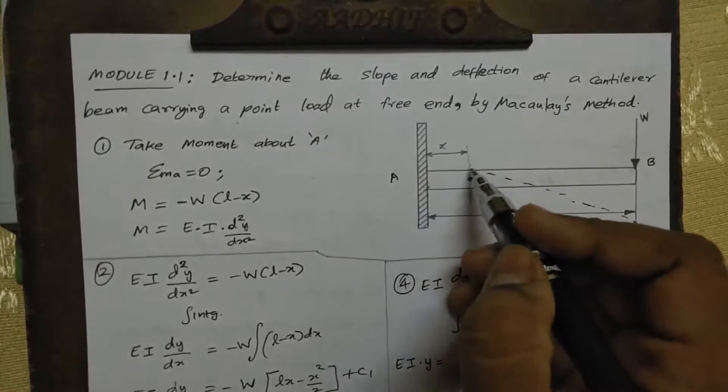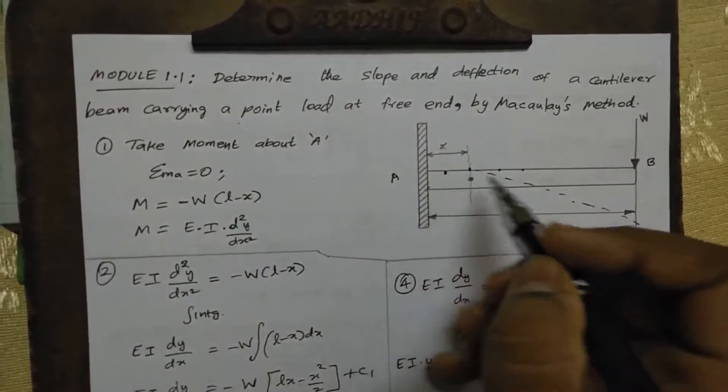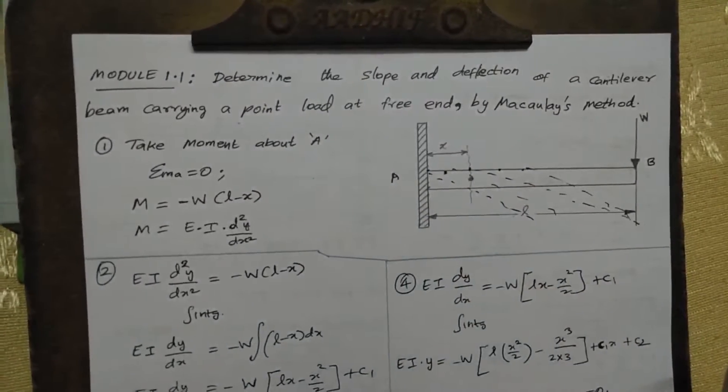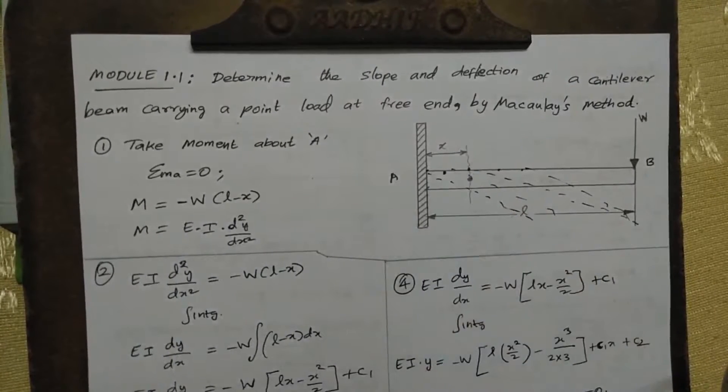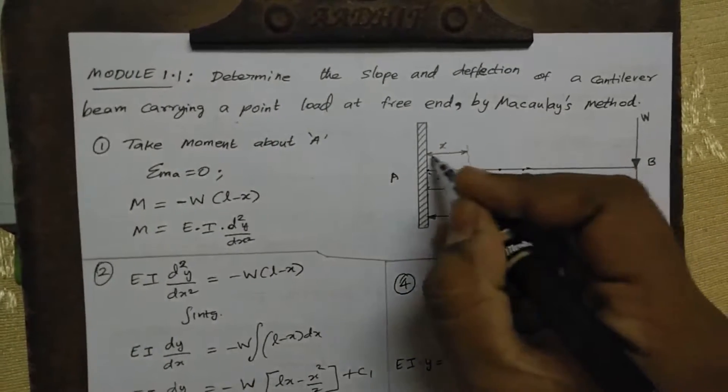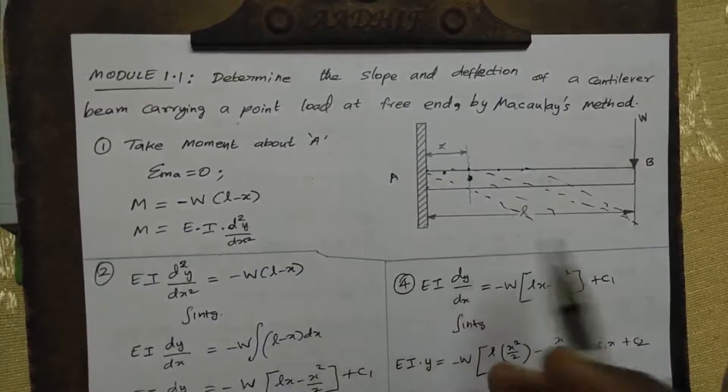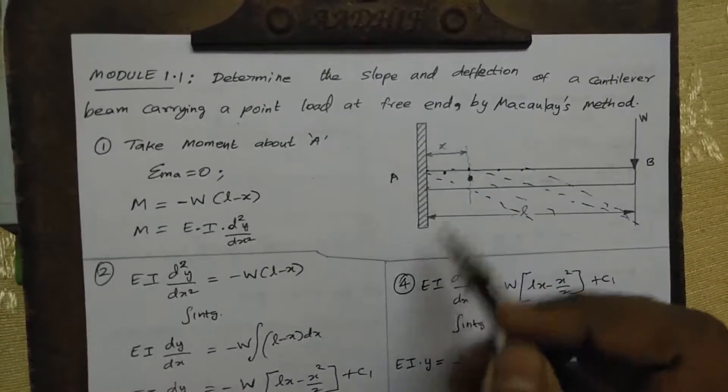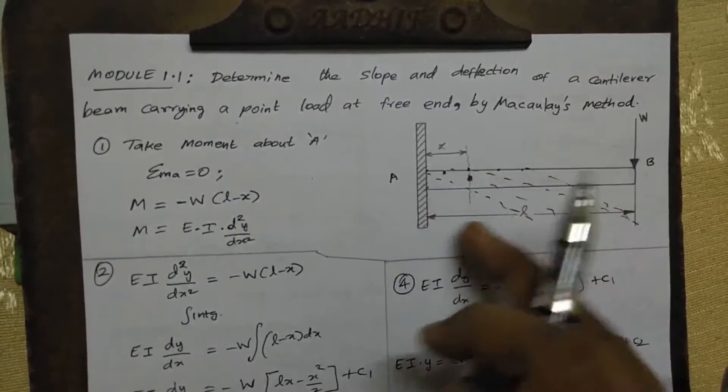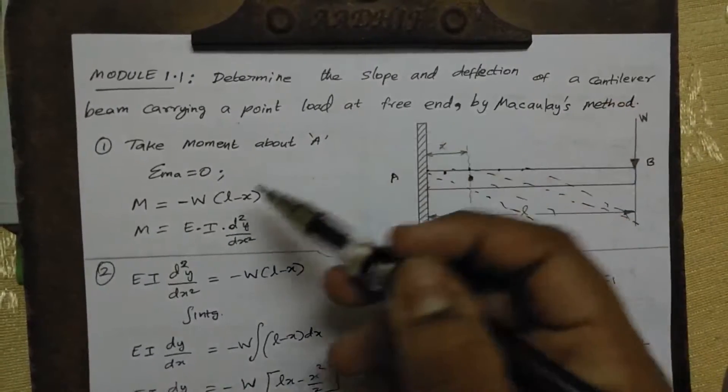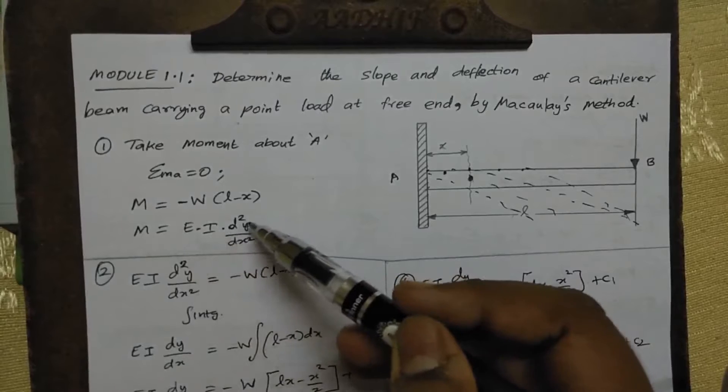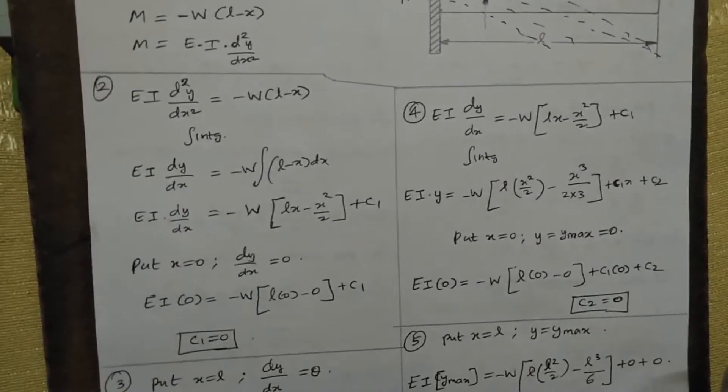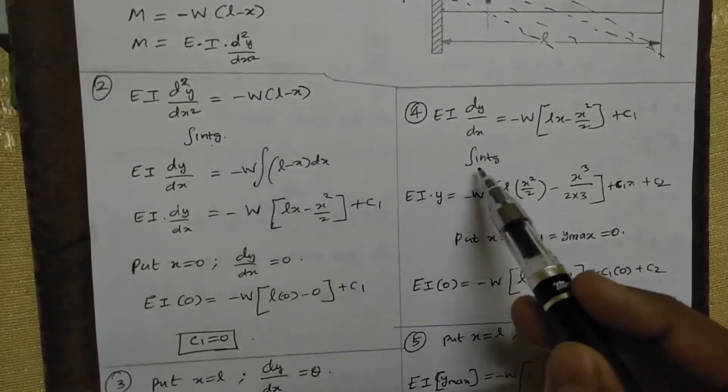We are selecting a point and naming it as x. The moment in the beam is W into (L minus x). This equals EI times d²y/dx², where E is the modulus, I is the moment of inertia. This is the double integration method. We integrate twice: first integration gives single integration, second time gives double integration.